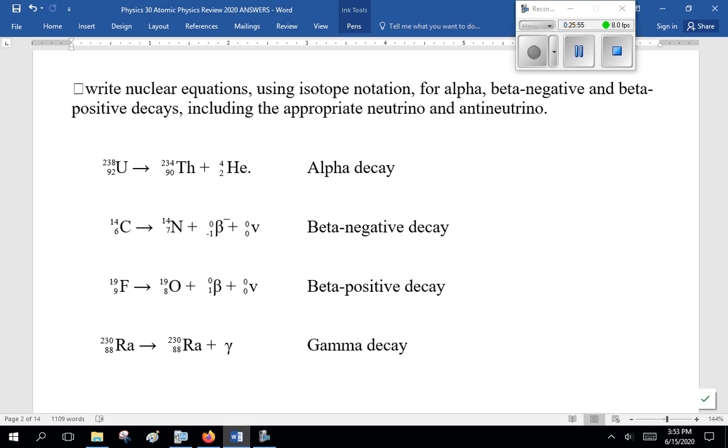Write nuclear equation using isotope notation. Alpha, beta. Alpha, beta negative, beta positive decay, gamma decay. Note. My apologies. That minus sign is supposed to be here for an anti-neutrino. For beta positive, it came making a positron. And, notice, for gamma decay, the numbers don't change because gamma radiation is straight energy. No protons or neutrons are harmed.